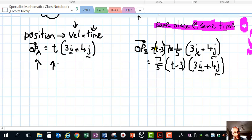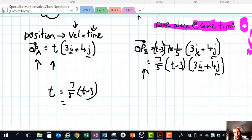We look at time on the A side, which is just t, and for particle B, when t equals 7/5(t - 3), that's when they'll be in the same place at the same time. Expanding the right-hand side: 7/5·t - 21/5 = t.